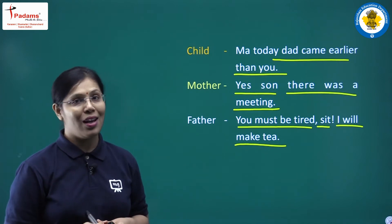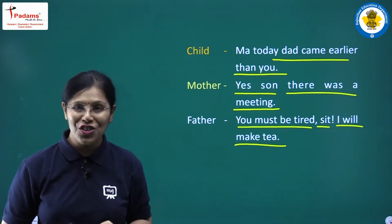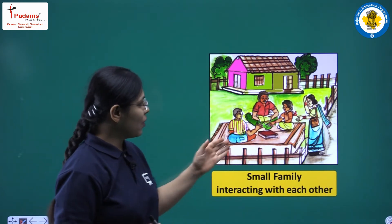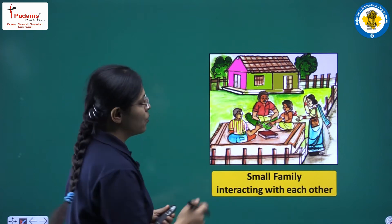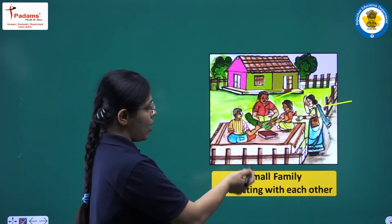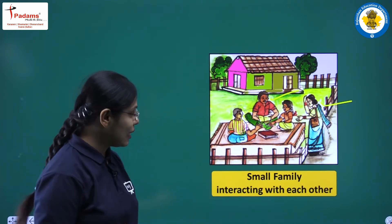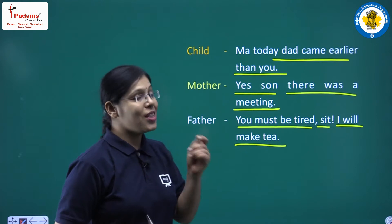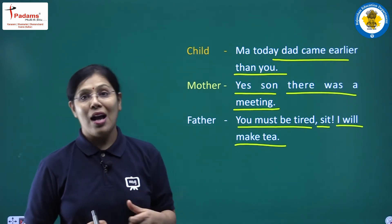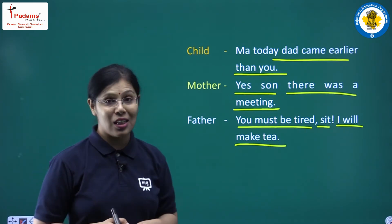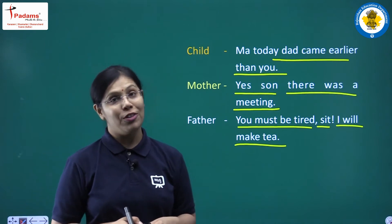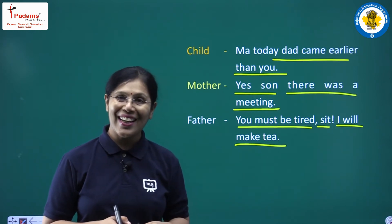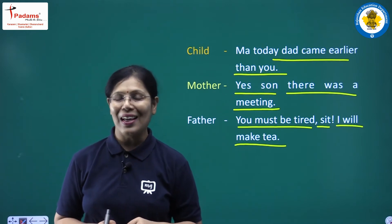There is a situation given about a family with three members: mother, father, and the child. Looking at the picture, it is a small family — you can see two children and father and mother interacting with each other. The child says 'Aaj papa aap se jaldi aa gaye hain,' the mother says she is late because of an office meeting, and father asks her to rest while he makes tea.